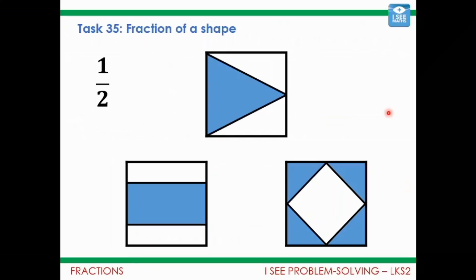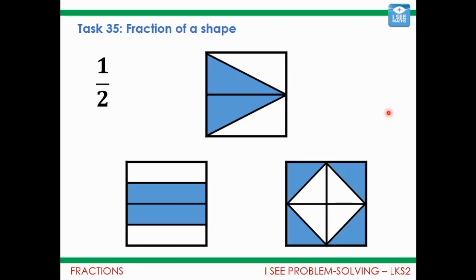I also want to look at another task from yesterday where you were asked to split shapes into a half — which ones are half blue, third blue, and a quarter blue. These ones are all a half. Have a look at the lines I've drawn to help see that each one is half blue. I've split this shape into equal triangles — two are blue and two are white. Then equal rectangles — two are white and two are blue. And here, four triangles are white and four are blue.